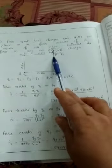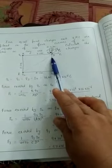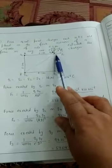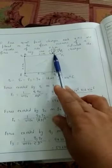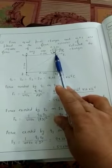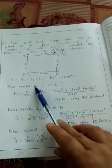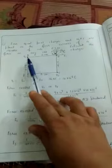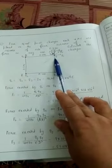For the entire system of charges, we need to calculate total force on any one charge. Let us calculate the total force on this charge q4. F1 is the force exerted by charge q1 on q4.